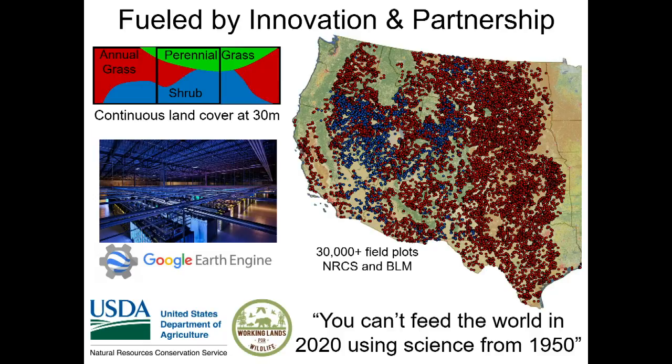When I say continuous, I think about these pixels or grids. Historically they've been focused on categories — this is grass, this is shrub, this is tree. We want to take it the next step and say no, this is 20% grass, 30% shrub, a little bit of tree, and the rest is bare ground. So we want to break that information down, and we're using Google Earth Engine to do that.